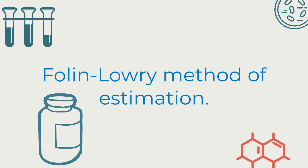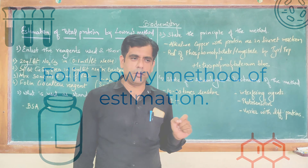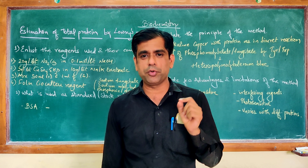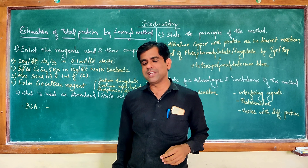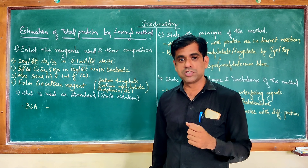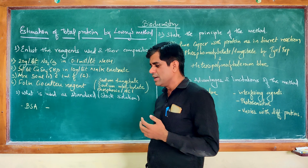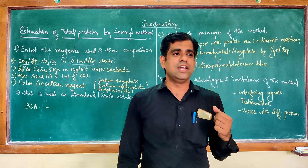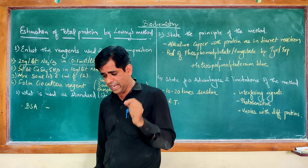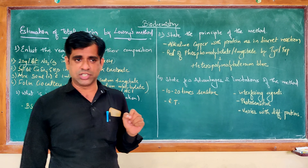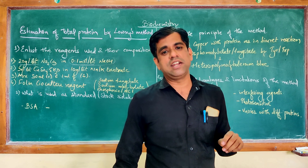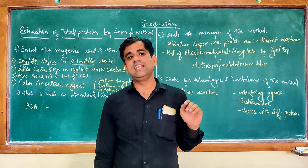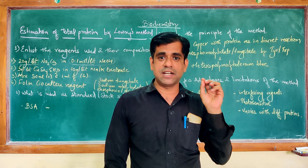Hi friends, you are back with me, Professor Girish Kukreja. Today we will be talking about one of the most commonly used biochemical methods for estimation of total proteins in a given sample — Lowry's method, which uses the Folin-Ciocalteau reagent. The method was described by Lowry in his 1951 paper, which is one of the most highly cited papers in scientific literature, having been cited more than 300,000 times.